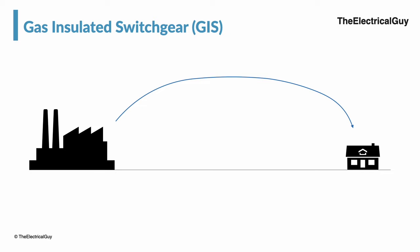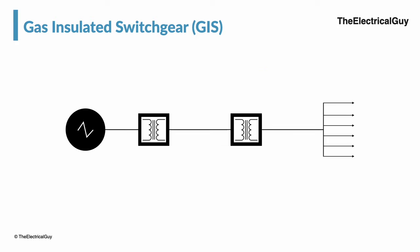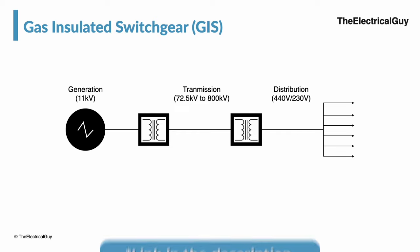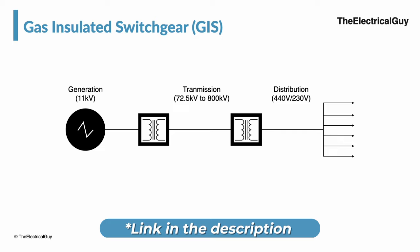To make this power available to the end consumer we need to transmit it over a long distance and after that we need to distribute it. Generation happens at a lower voltage level, transmission happens at high and extra high voltage level, and then again distribution happens at a lower voltage level. Substations help us throughout these phases in lowering and increasing the voltage levels. Substations also serve many other purposes.